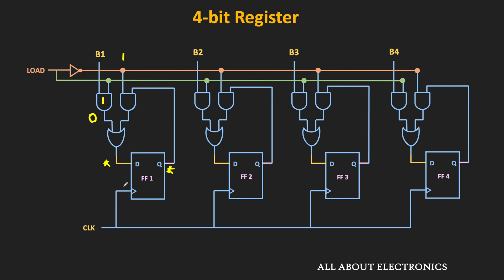That means whenever you want to load new data, first make the data available on the data bus, and then enable this load signal. When this load signal is low, the register will maintain the previous data. This is the very basic register with the load input. Here, this load signal is a synchronous input — meaning that once this load signal is high, the data will get loaded into the register only at the clock transition.